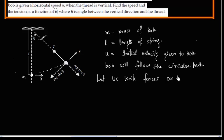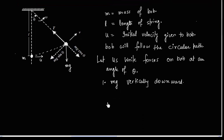So after some time it will cover an angle theta. We can write forces on the bob at angle theta. One force Mg is acting vertically downward.